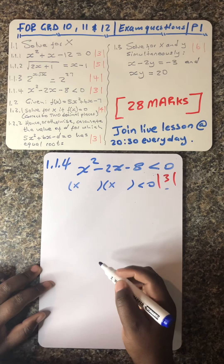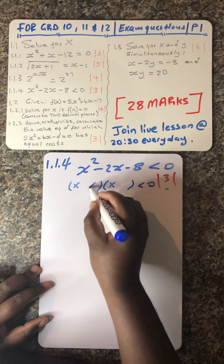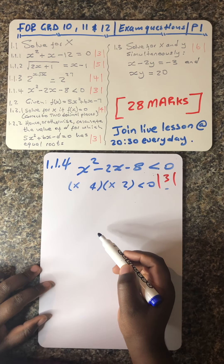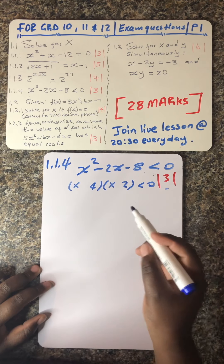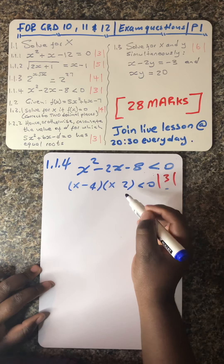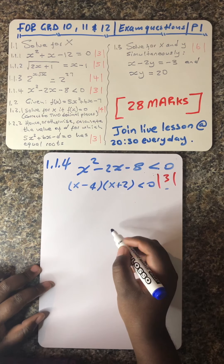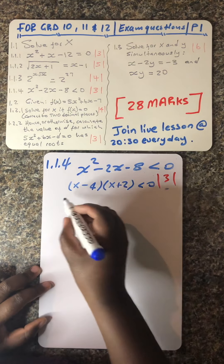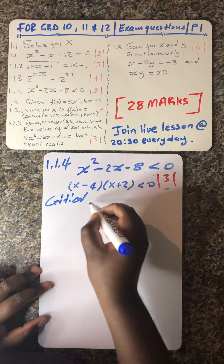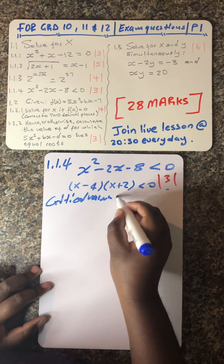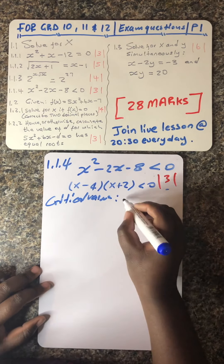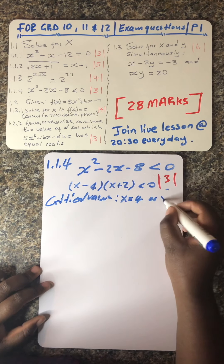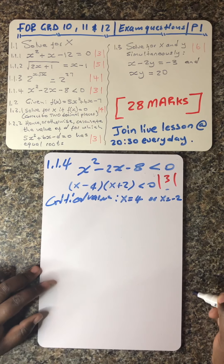This is also not complicated to get the factors. You know you've got 4 and 2 — when you multiply them it gives you 8. You obviously know this is a negative sign and this is a positive sign, so that when you say negative 4 and positive 2, it gives you negative 2. So there's something called critical values. Critical values come from your factors — that's where x equals 4 or x equals negative 2.